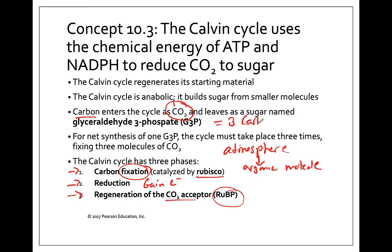G3P has three carbons. The cell will often take two G3Ps and add them together to make glucose. This is an anabolic process — we're building. This is endergonic; we have to put energy into this process in order to build a sugar molecule. The process on the next page is going to build a G3P, which takes three cycles because G3P has three carbons.